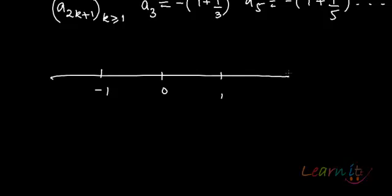Now a_2k has terms like 1 + 1/2, so that is 3/2—this is your a_2. Then you have 5/4, so you have your term a_4 somewhere here. Basically, your terms like 1 + 1/n as n tends to infinity will tend to 1, because 1/n will be 0.